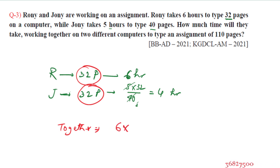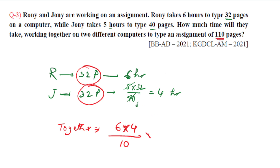Using the combined rate formula: A into B divided by A plus B equals 6 into 4 divided by 6 plus 4, which is 10. With 32 pages, you calculate the combined time. The rest of the time covers the remaining pages — approximately 10 pages per unit.